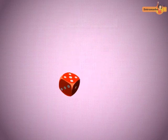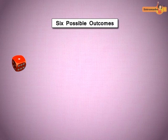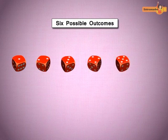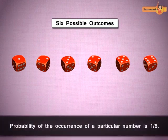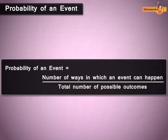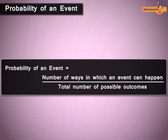When a die is thrown, there are six possible outcomes: 1, 2, 3, 4, 5, 6. The probability of the occurrence of a particular number is 1 upon 6. Probability of happening an event is equal to number of ways it can happen upon total number of possible outcomes.